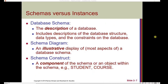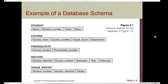A database schema provides a description of a database, including descriptions of the database structure, data types, and constraints. A schema diagram is an illustrative display of most aspects of the database schema. A schema construct is a component of the schema — for example, a student or course within the university mini-world. Here's an example of a database schema. Notice that there aren't any pieces of data included — simply the skeleton structure of each component. This is our university mini-world: a student, a course, a prerequisite, a section, and a grade report, each with their own attributes but no actual data.